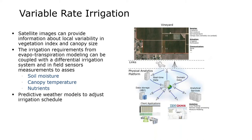An important component is integrating weather model data. You integrate all this data, run analytics on the cloud, do calculations, and then go back to a particular farm to adjust an irrigation or fertilization system so that the dispensing of water or chemicals is variable and adapted to local conditions.